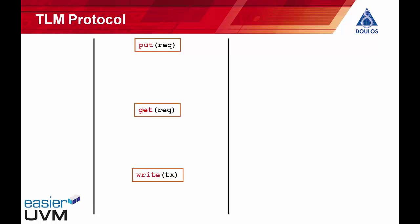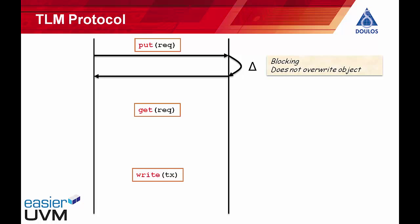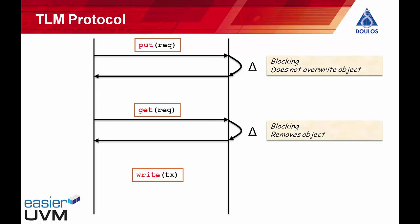Let's take a look at three of the most commonly used methods as a representative sample: put, get, and write. Put is used to send transactions and is a blocking method, meaning it doesn't return until the receiver is ready to receive the next call. This guarantees that put won't overwrite or lose any objects. Similarly, get is a blocking method — the caller calls get to ask for a request, the implementation blocks until it's ready to return the transaction, and when get returns the object is effectively removed from the callee.